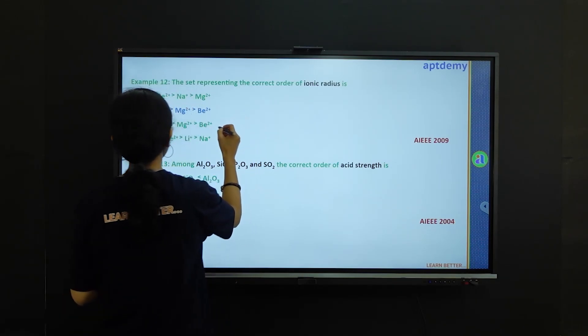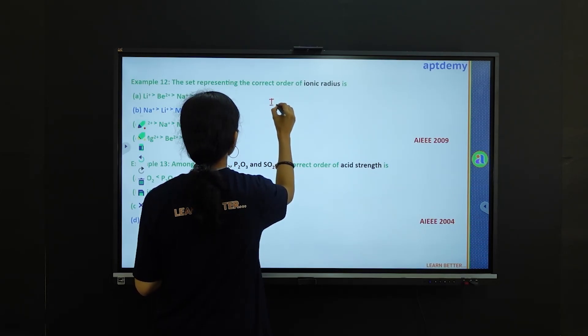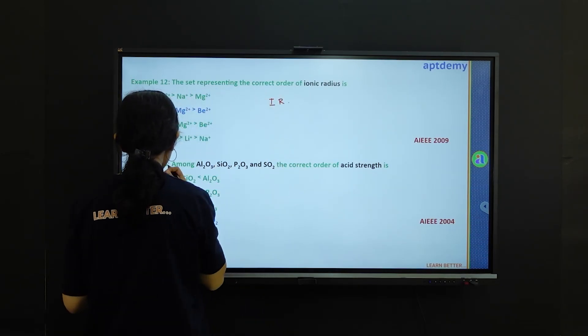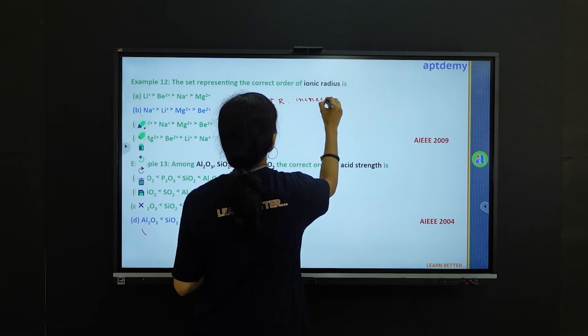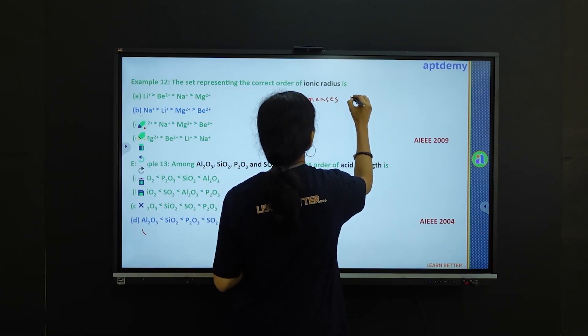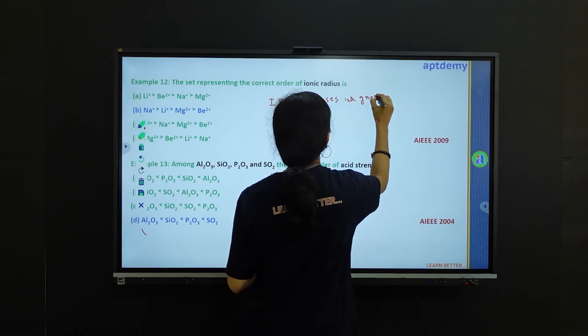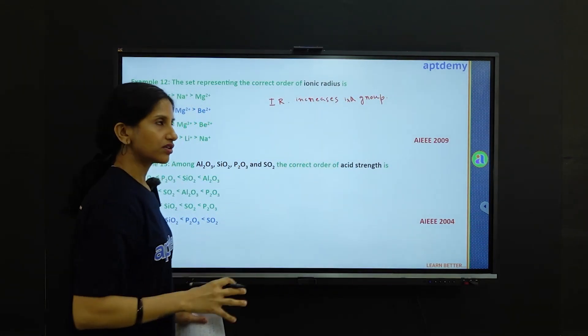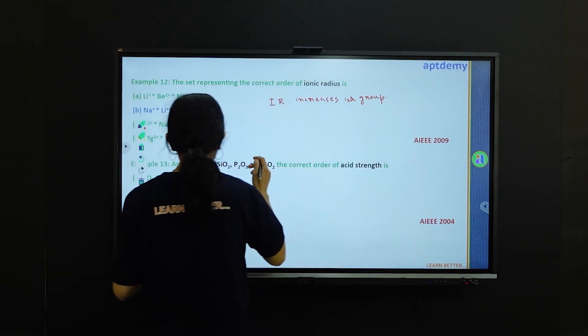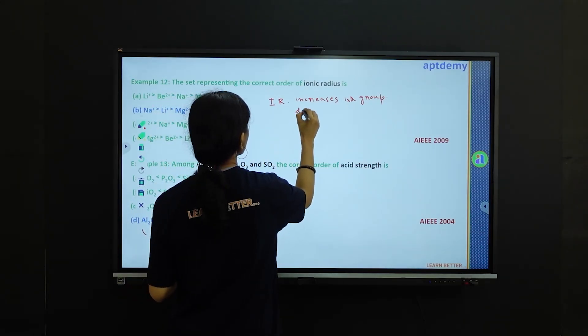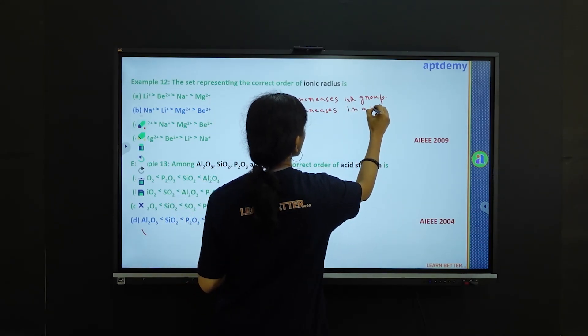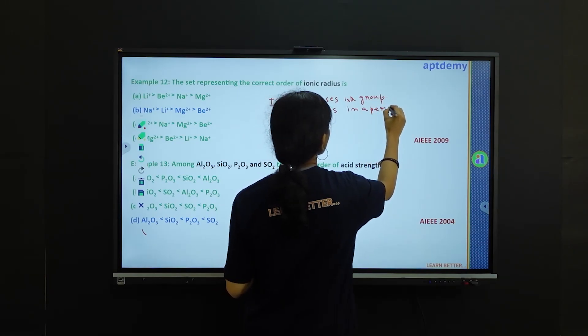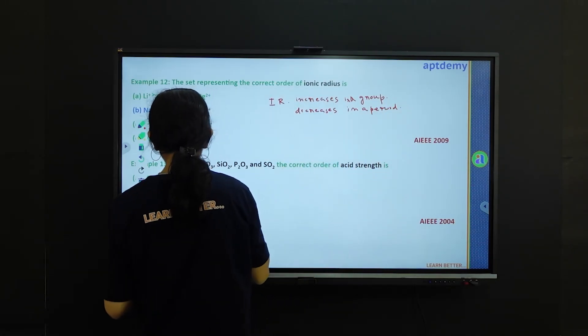From the periodic table, ionic radius increases moving from top to bottom. In a group, down the group, the ionic radius increases. And it decreases in a period, across a period from left to right. This is the fact that we need to know.